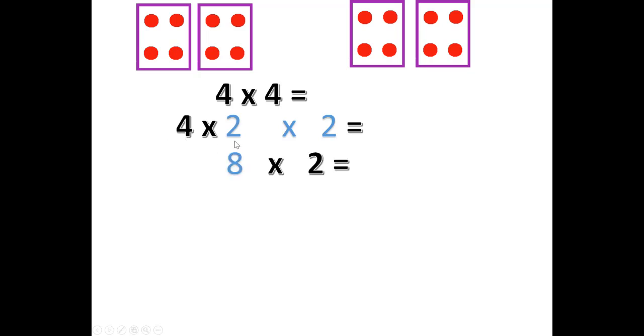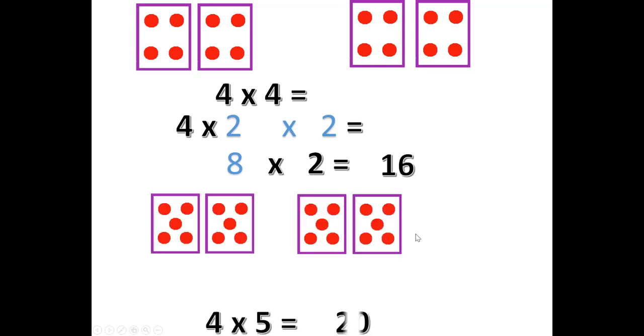Then 4 times 2 is 8, and 8 times 2 is 16. And from our earlier video we remember 4 times 5 is 20.